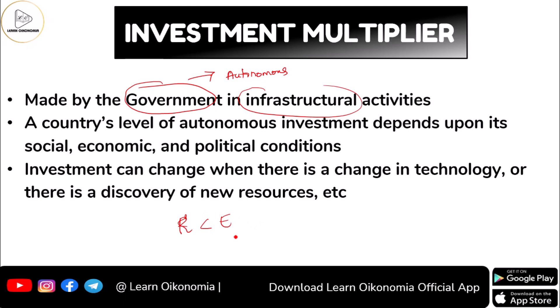The government compares its revenue and expenditure, and mostly expenditure exceeds revenue — there is a shortage of revenue. The government finances this investment expenditure through borrowing money, which is how it can go for autonomous investment even when revenue is insufficient.